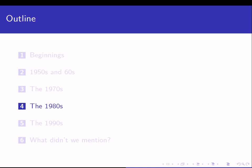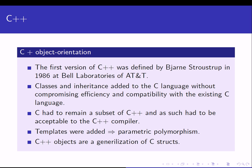Now we're in the 1980s. C++ is the original C language with object orientation added. The first version was defined by Bjarne Stroustrup in 1986 at Bell Laboratories. The most important issue was that classes and inheritance were added to C without compromising efficiency or compatibility — all code written in C could still be compiled with the C++ compiler, so C had to remain a subset of C++.